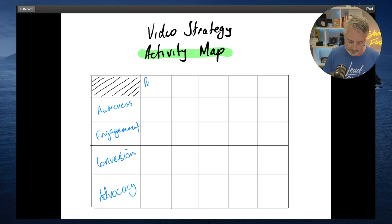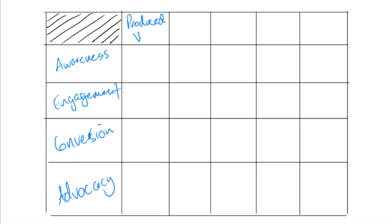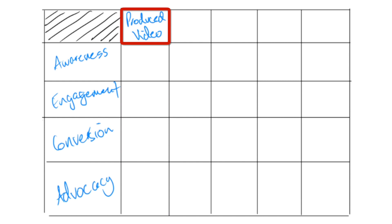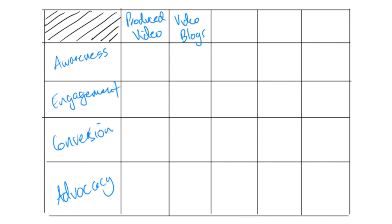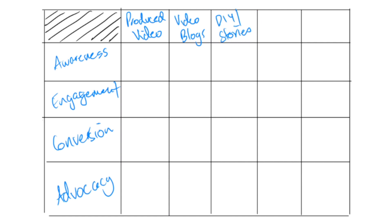We're going to break it down into a few different key types of videos. First, produced video, which we're going to potentially use a video marketing company for — these are higher budget, more produced videos spaced throughout the year. Then we're going to do some video blogs, which depending on the capacity of your specific business, you might produce in-house or use a video producer. We're also going to plan for some DIY type videos shot on iPhones, and stories type videos using Instagram stories and TikTok kind of content — more rough and ready raw content. We're also going to consider implementing some live streamed video throughout the year.